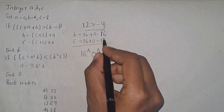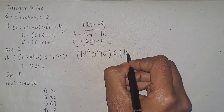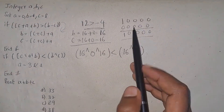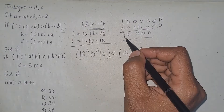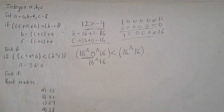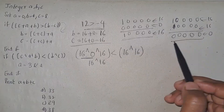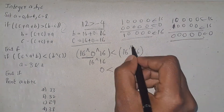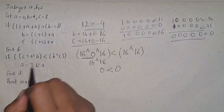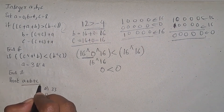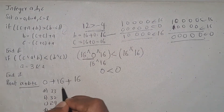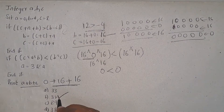Check: 0 bitwise XOR c where c is 0, and b is 16 bitwise XOR 16. So the condition is: 16 XOR 0 is 16, and 16 XOR 16 is 0. Is 0 less than 0? This is false, so you will not go into the inner if condition. End the condition and print a plus b plus c. a is 0, b is 16, c is 16, so the sum is 32. The answer is 32.